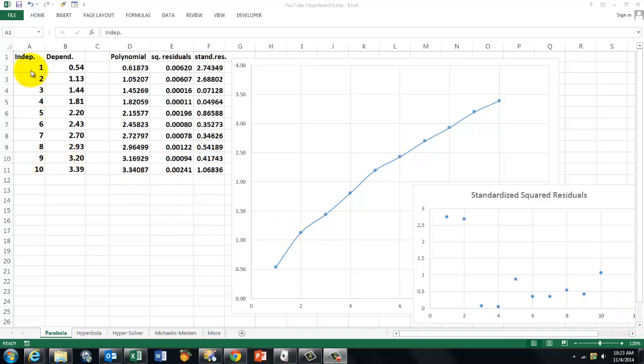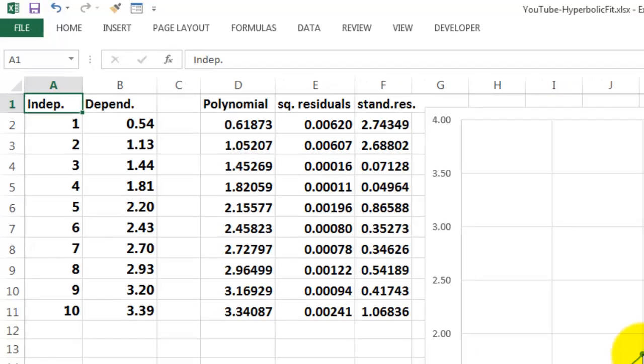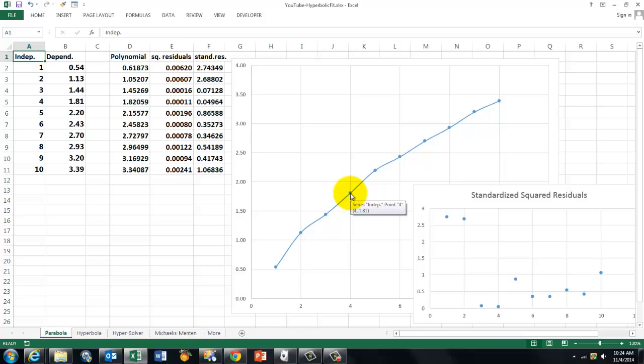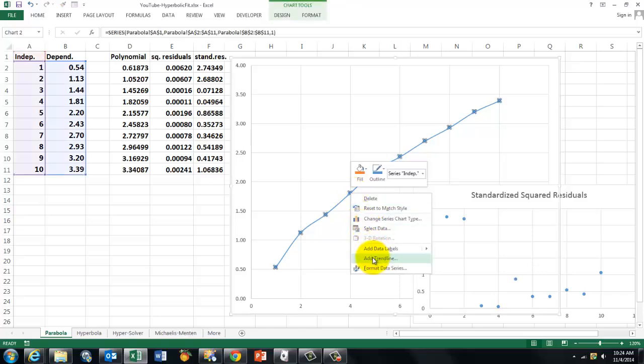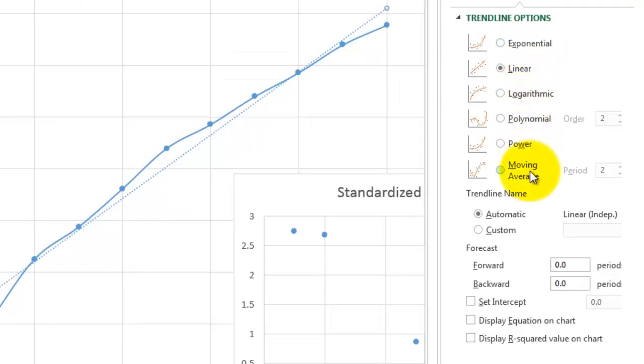Let's say we have these simple data, an independent variable and a dependent one, and we assume there is a hyperbolic relationship between them. What you could do in Excel is right-click on your curve, add a trendline, and notice that there are several options but not the hyperbolic curve.